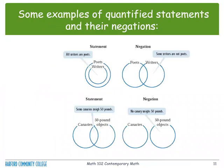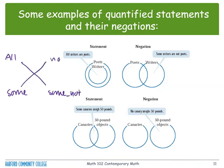Some examples of quantifier statements and their negations. The statement: all writers are poets. Negation: some writers are not poets. Using the four-corner diagram with all, some, some not, and none going counterclockwise with diagonal arrows — the negation of all is some not, and the negation of some is none.